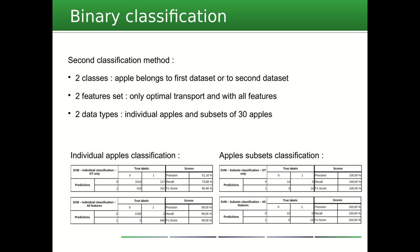To get closer to real cases, we then gathered our two datasets to create a single one containing two classes. The apple belongs either to the initial dataset called Difficult, corresponding to varieties called Galamutants, or to the second dataset, non-Galamutant. From there, we performed an individual classification of the apples and a second classification of subsets of 30 apples randomly chosen from one of the two initial sets.